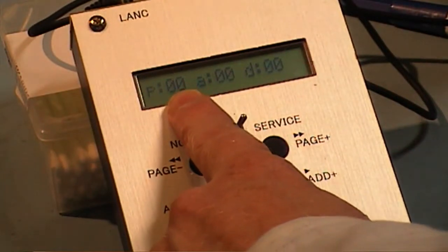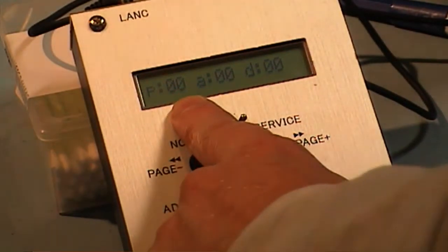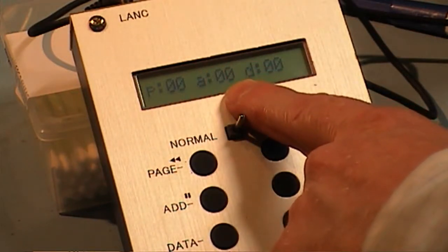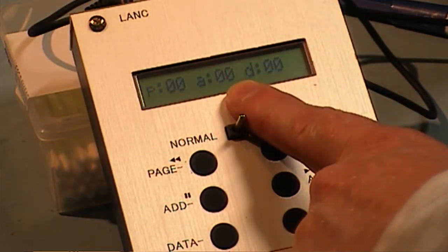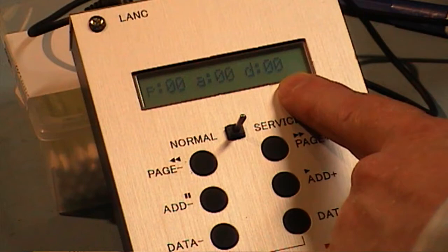The first two zeros here is the page. The next two is the address, and the last two over here is the actual data.